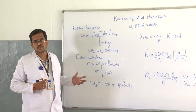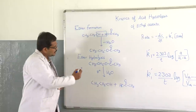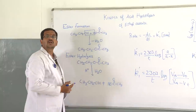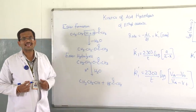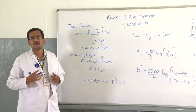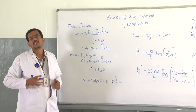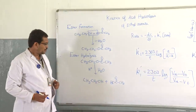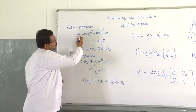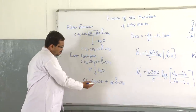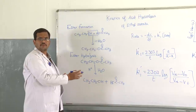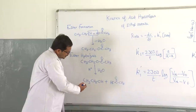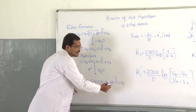Ethyl acetate, in the presence of a mineral acid, undergoes hydrolysis. Hydrolysis means the molecule undergoes cleavage with the help of water. Since it's a reversible reaction, the same reactants that form the ester are produced as products — ethyl alcohol and acetic acid.